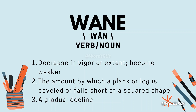Things that wane simply grow smaller. The word wax is an antonym, or opposite, of wane. When something waxes, it grows bigger, but when something wanes, it grows smaller. For example, the moon waxes and wanes every month, or trends wane quicker than we are able to follow them.